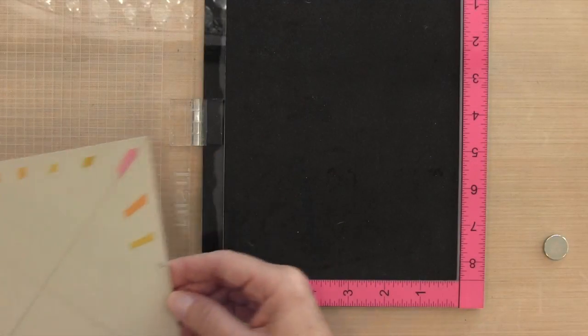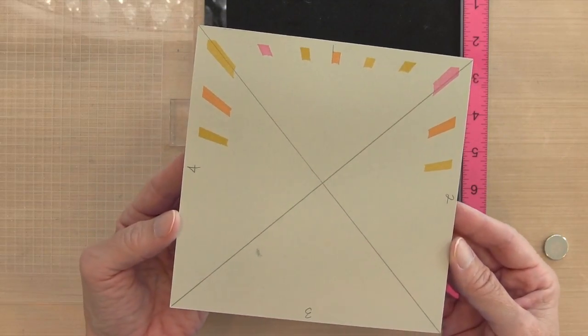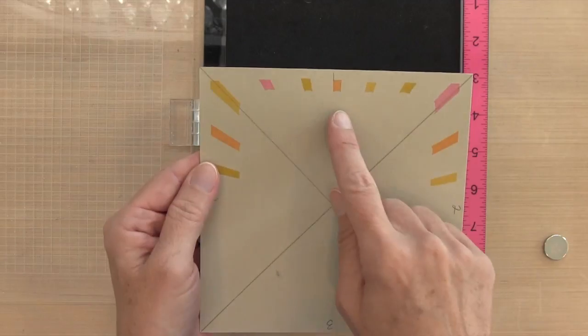So I'm going to do the background now. I've cut a piece of 6 by 6 inch cardstock. This is crumb cake.